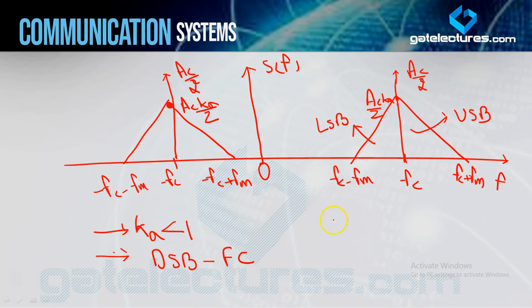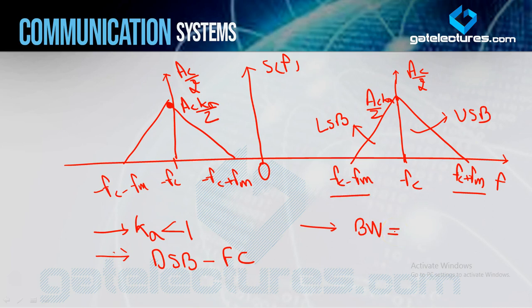Now if I calculate bandwidth: bandwidth = highest frequency component minus lowest frequency component in the positive side. So bandwidth = (FC + FM) − (FC − FM) = 2FM. This is the standard bandwidth for basic AM.